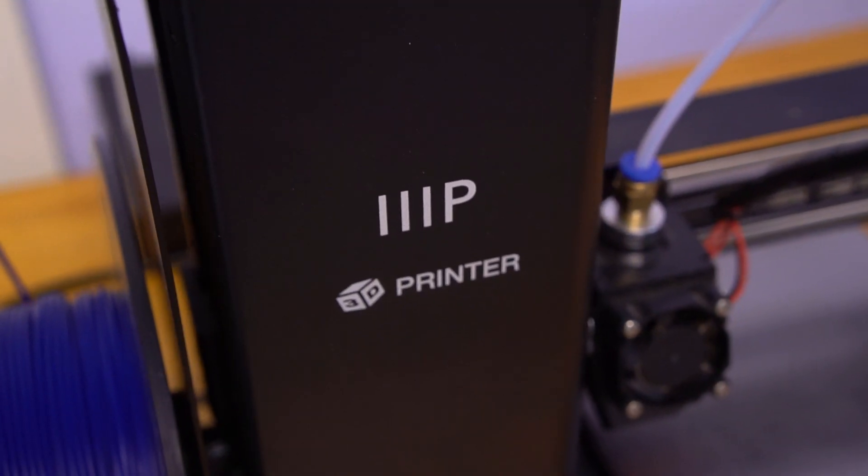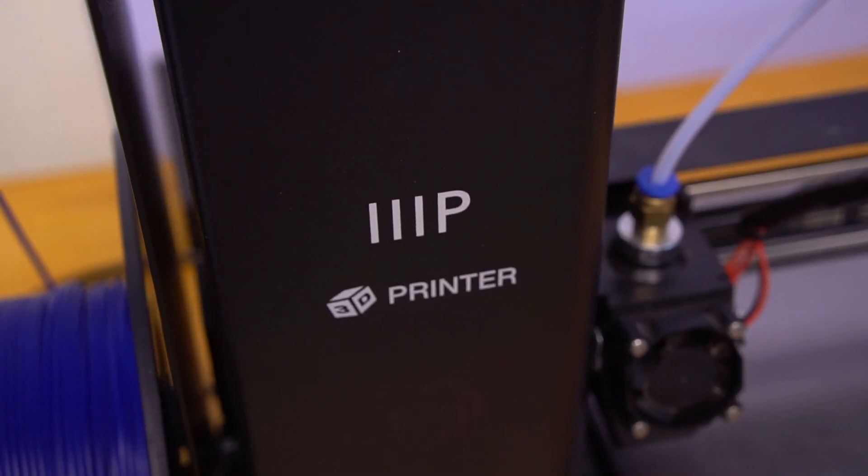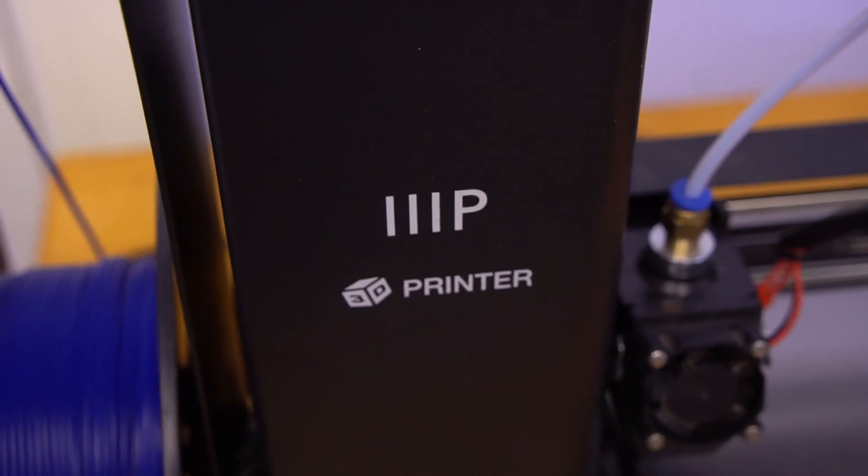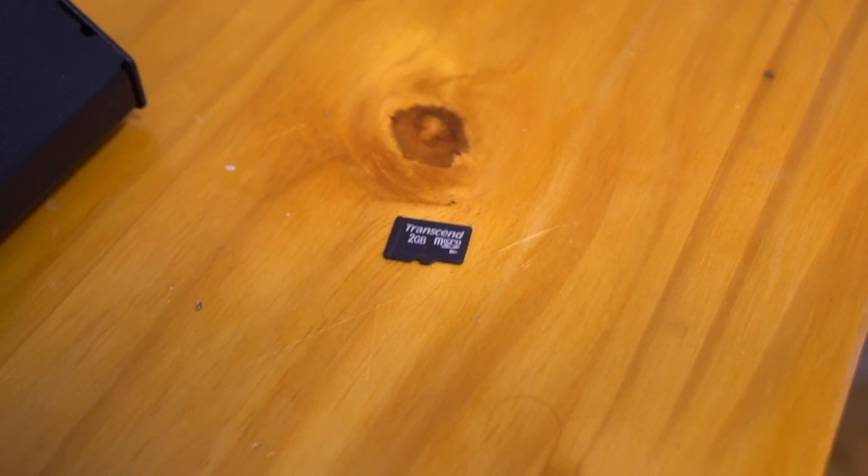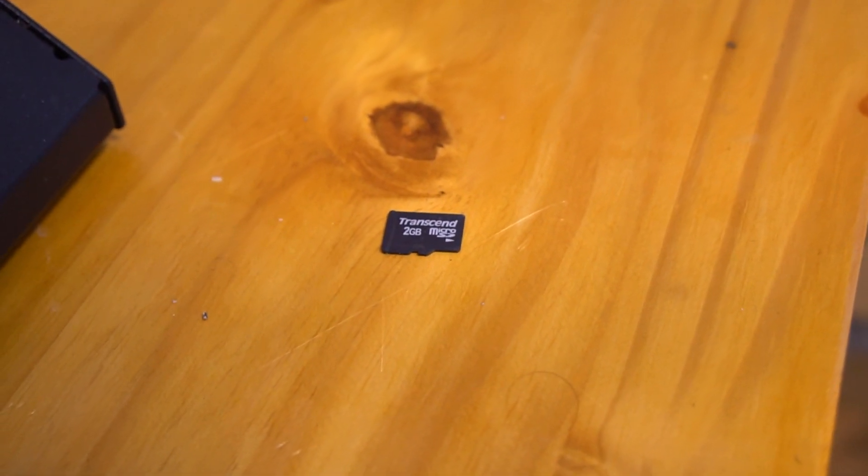And I'm going to start with this little robot right here, my MP Select Mini version 2. This quirky but reliable printer is a relatively inexpensive machine for its capability and I got mine for about 100 bucks used off eBay.